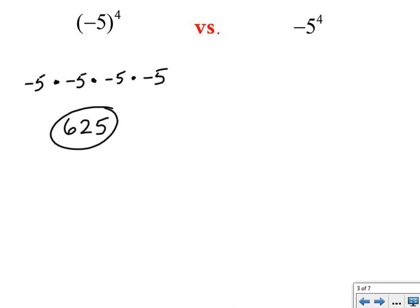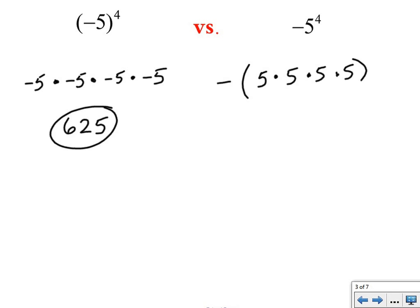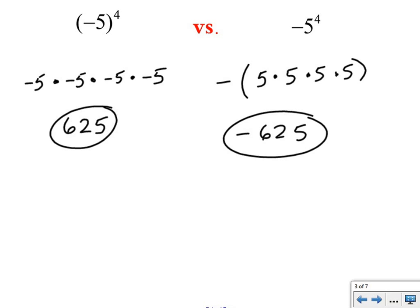On the right, there are no parentheses around the negative 5, which means the base is just the number 5, the exponent is 4, and the negative sign sits out front as if it's a negative 1 being multiplied by the power. So we write a negative out front, and the repeated multiplication is just 5 times 5 times 5 times 5. The negative only affects it one time, so we evaluate the power first — 5 times 5 times 5 times 5 is 625 — and then the negative makes the entire expression negative.